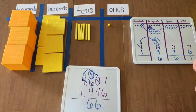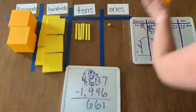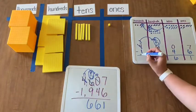If we have 3 thousands, we can easily take away 1,000, leaving us with 2 thousands.